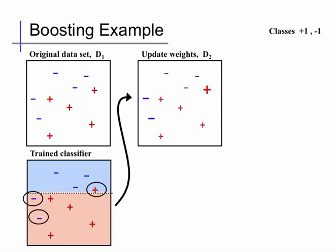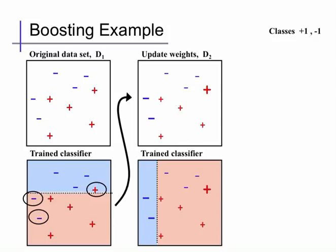Here's the best decision stump that we find. Again, we see that it gets a lot of points right. In particular, it tries to get the weighted points more right. Unlike the first predictor, this one is now focused on getting those three points correct. It also happens to get all of those correct, but is willing to make a mistake on three small minuses, as opposed to the two large minuses that we got wrong in the first step.